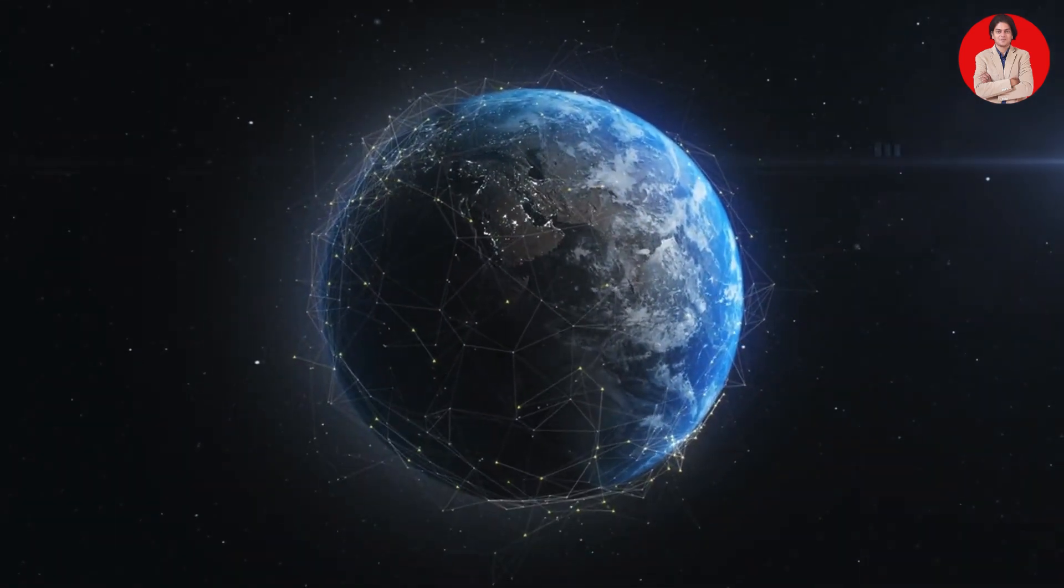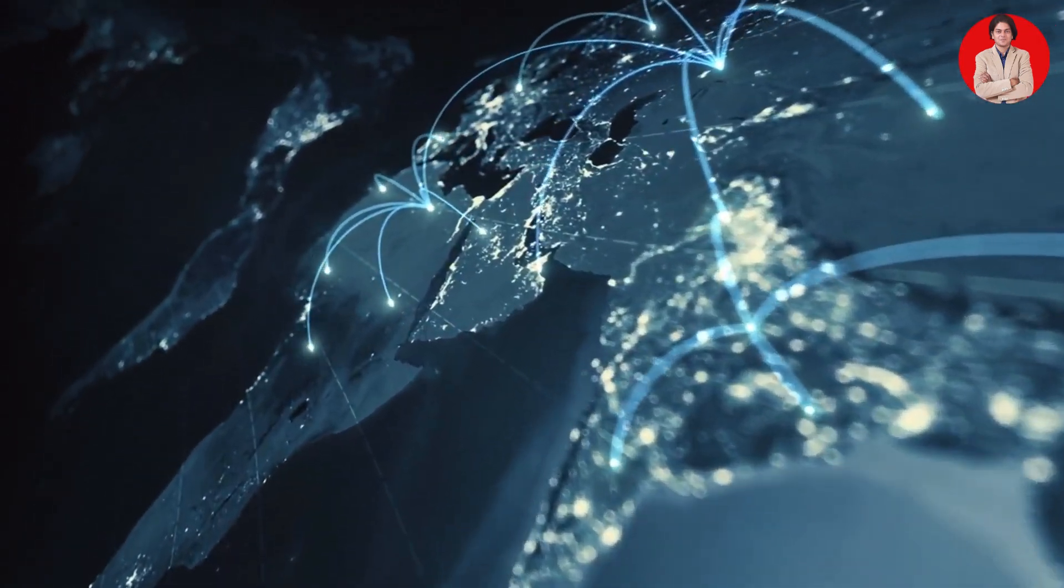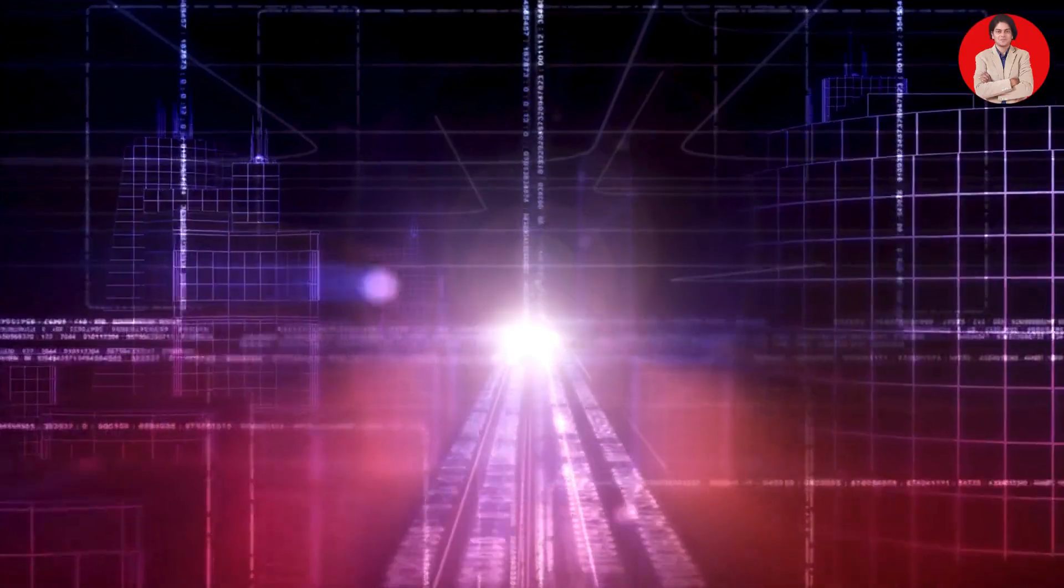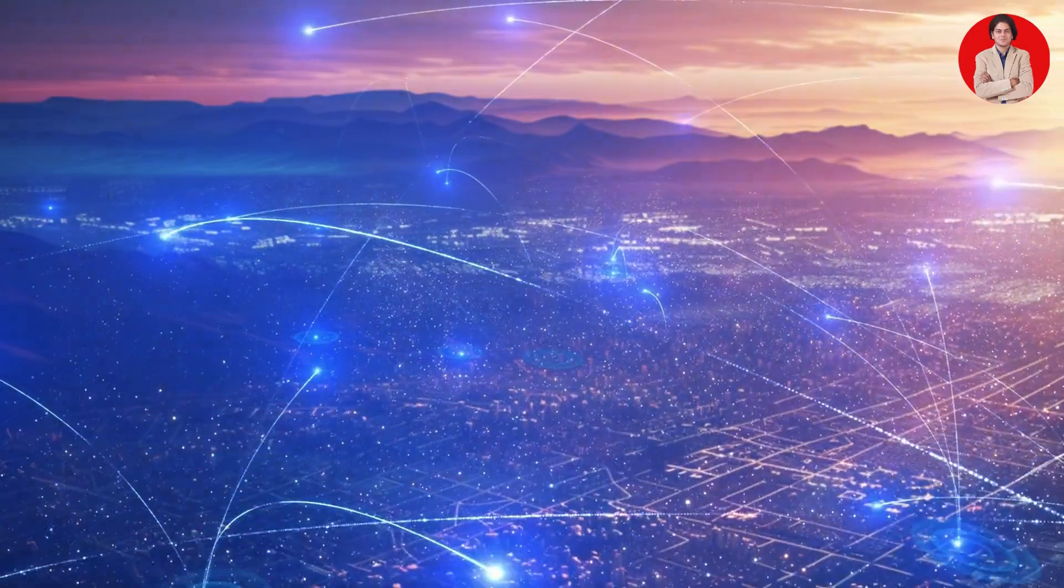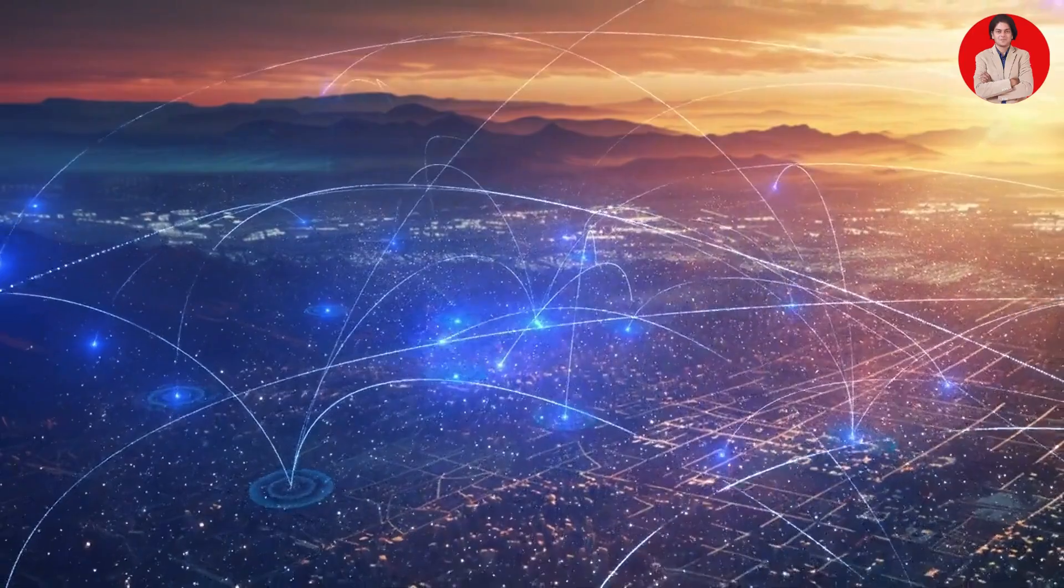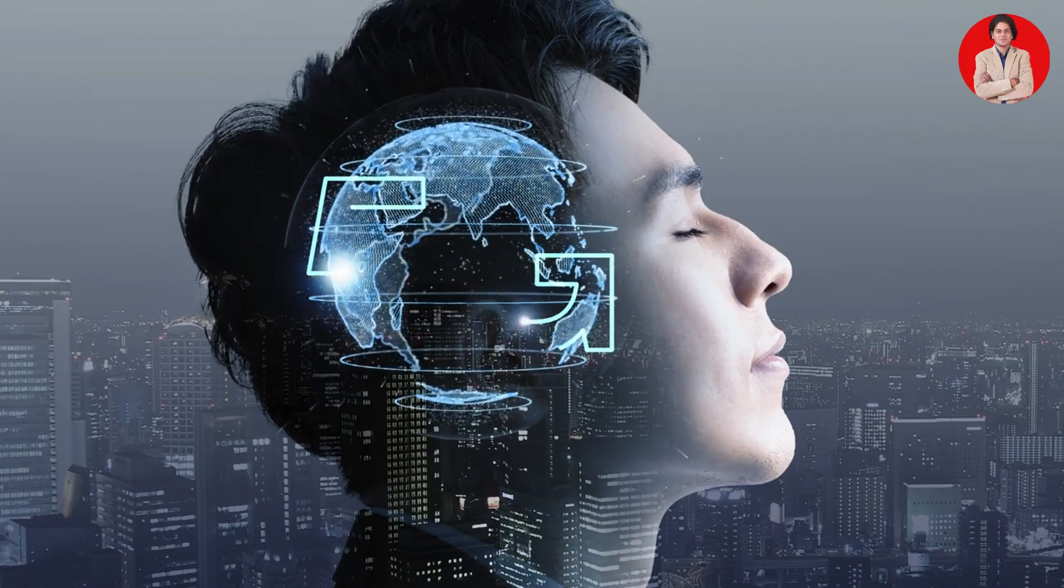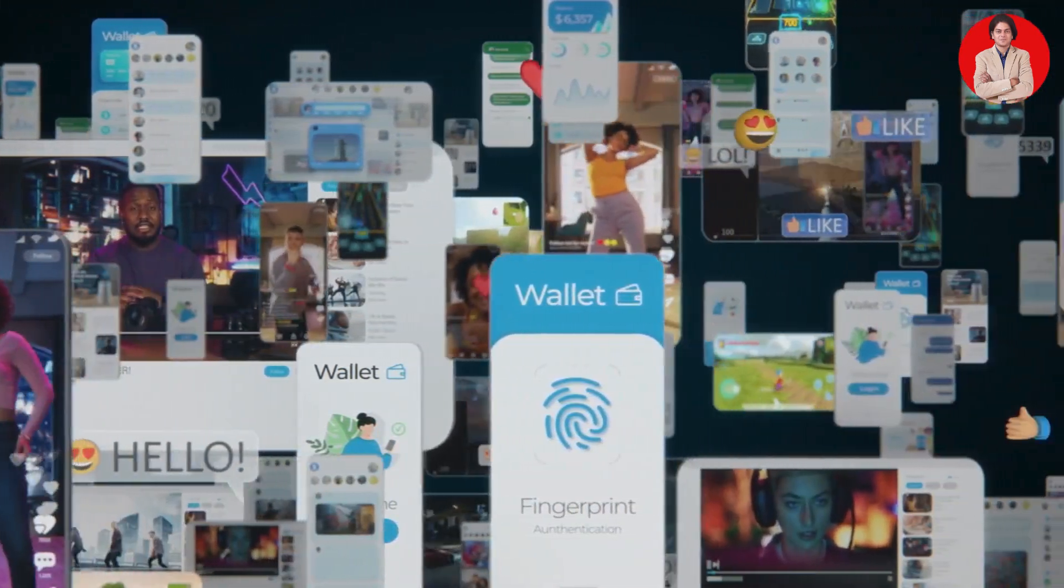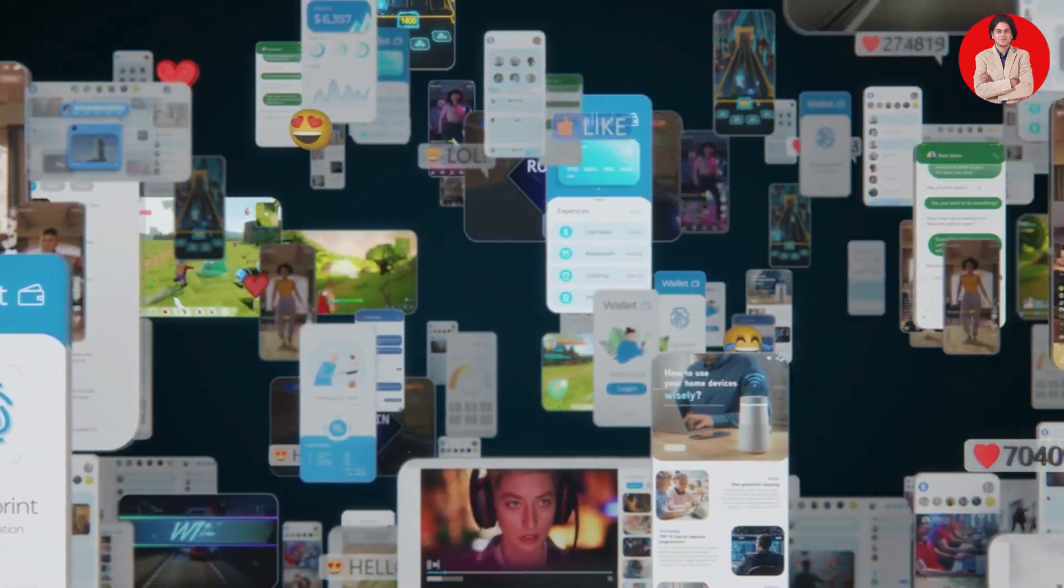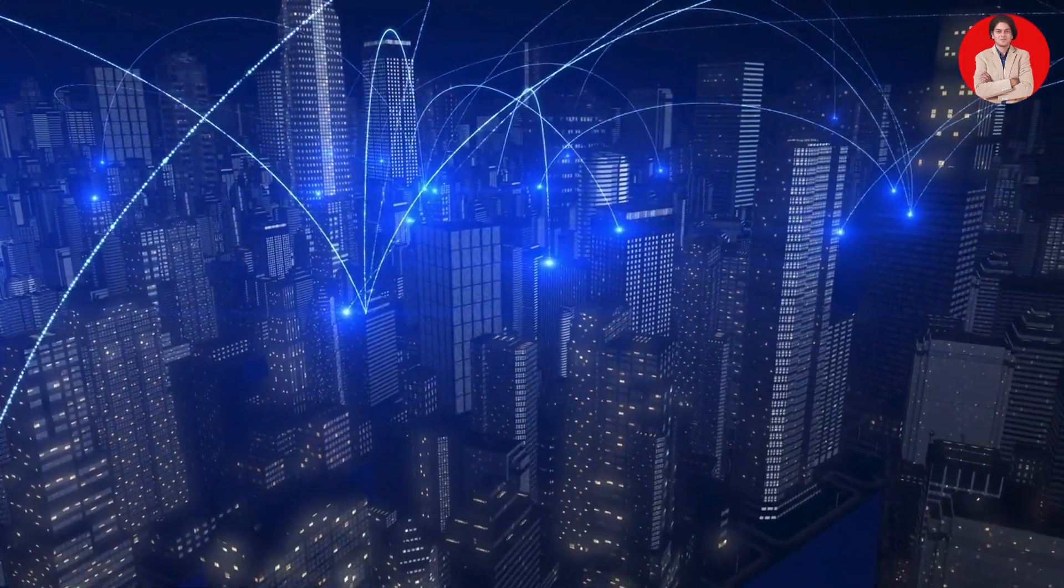WAN, Wide Area Network: A WAN connects devices over a much larger geographical area, often spanning cities, countries or even continents. The internet is the largest and most well known example of a WAN. MAN, Metropolitan Area Network: A MAN covers a larger area than a LAN, but smaller than a WAN, typically encompassing a city or metropolitan region.